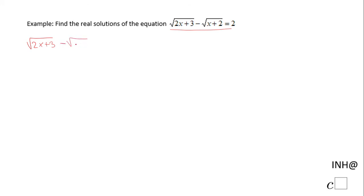First of all, I'm going to isolate one of the radicals, the first one: square root of 2x plus 3. How am I going to do that? By adding the square root of x plus 2 on both sides.